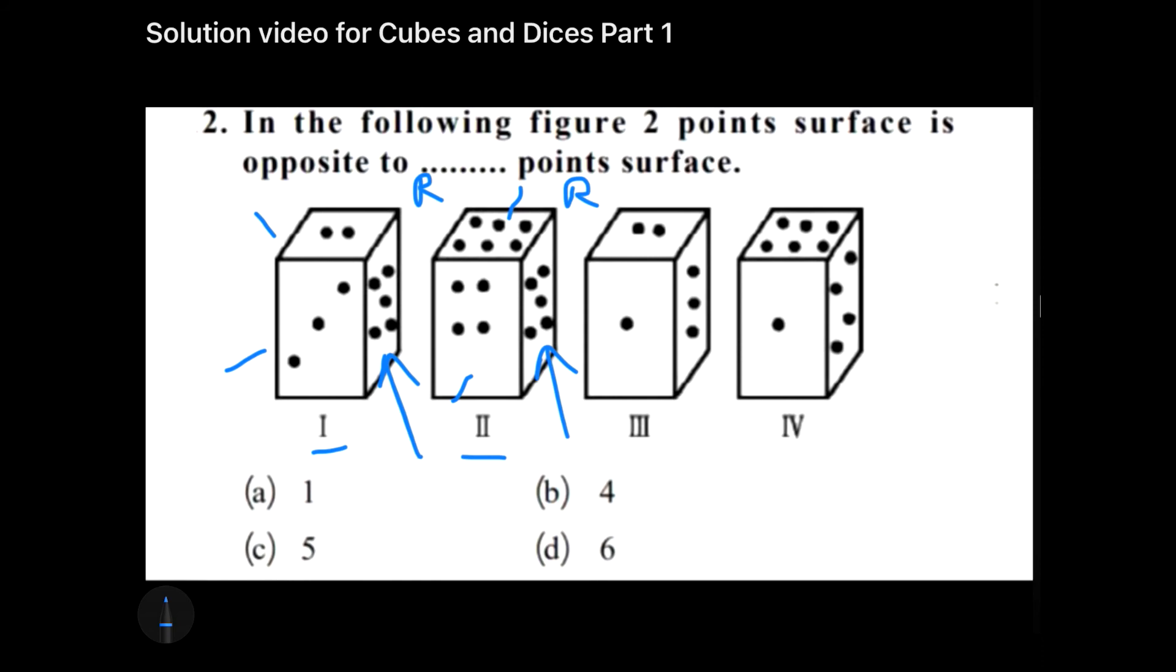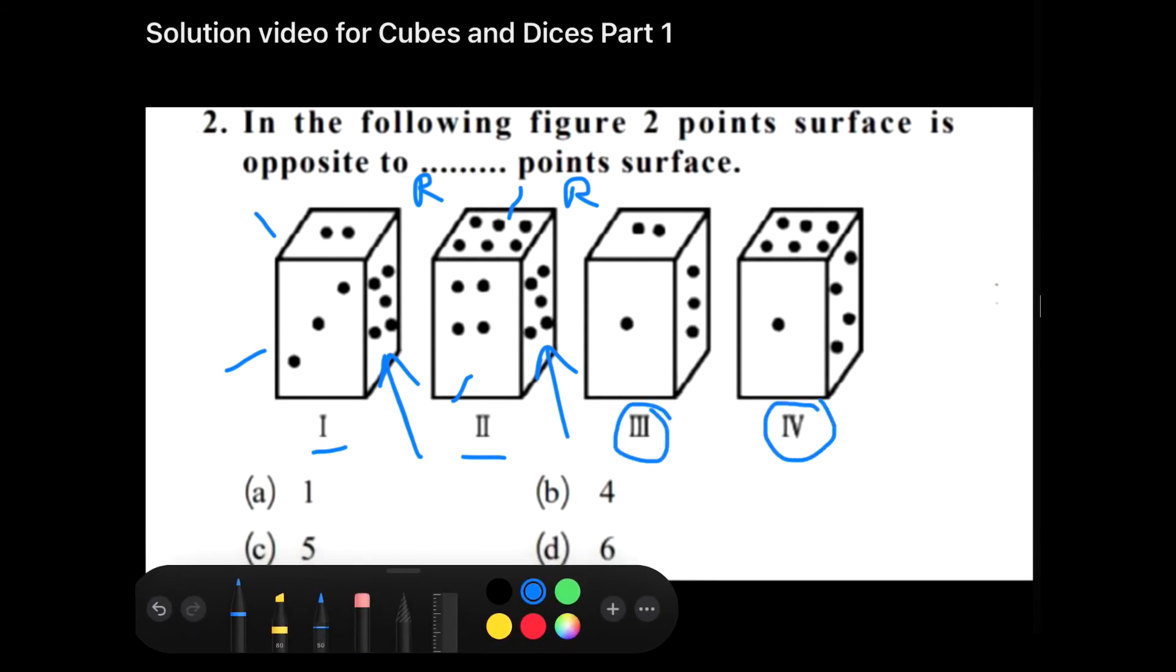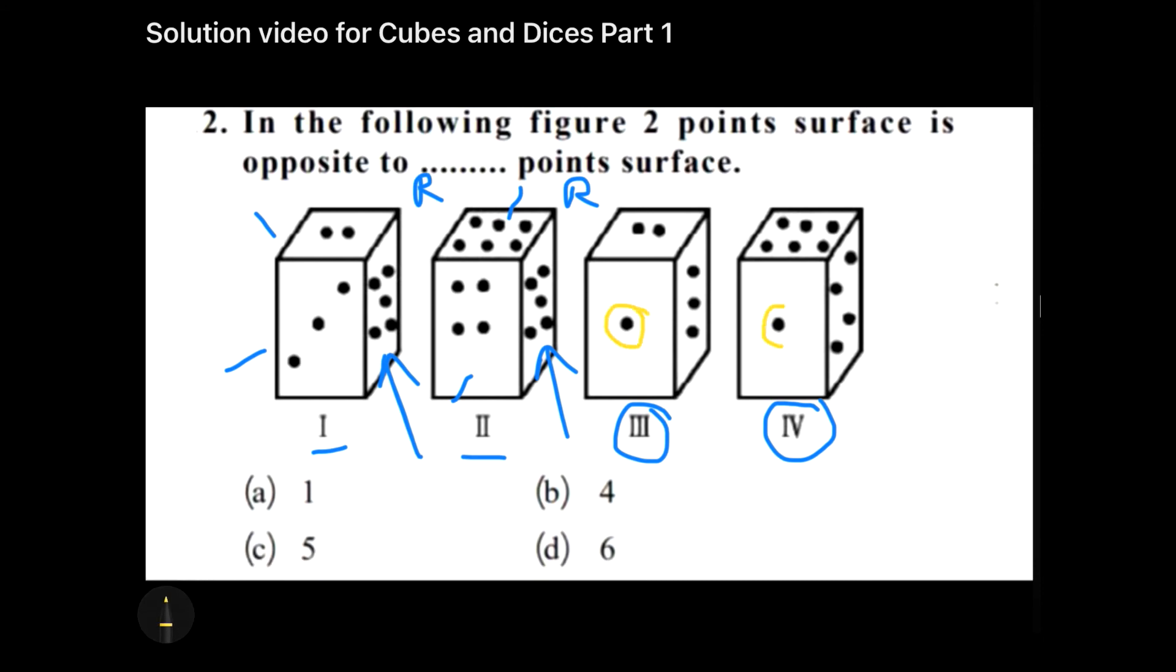But just to confirm this fact I will again go to figure number three and figure number four. In figure number three and figure number four I can observe that one is in the front side in both the cases. So if one is in the front side in both the cases, again this will be possible only when I flip the cube or the dice in such a way that the front side remains the same.